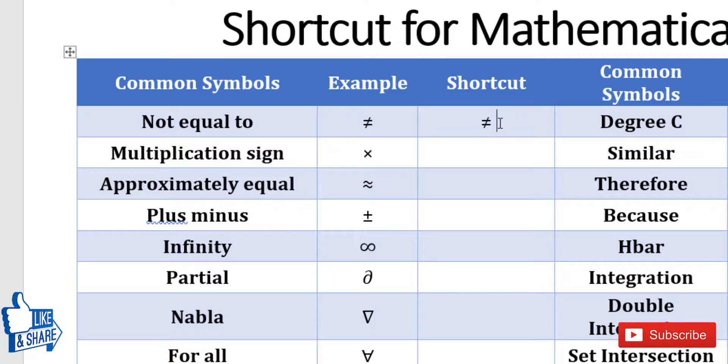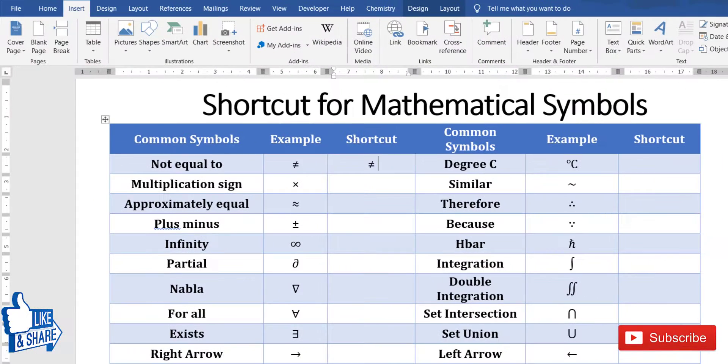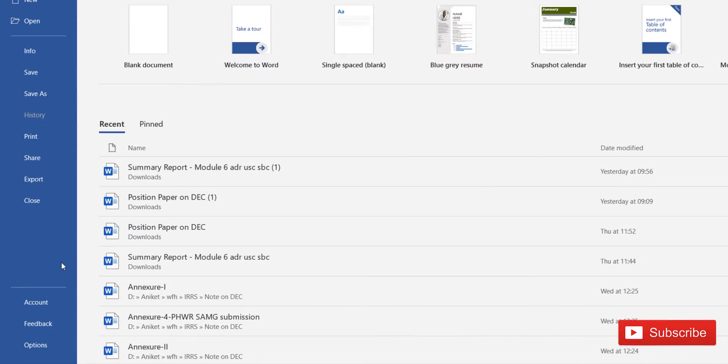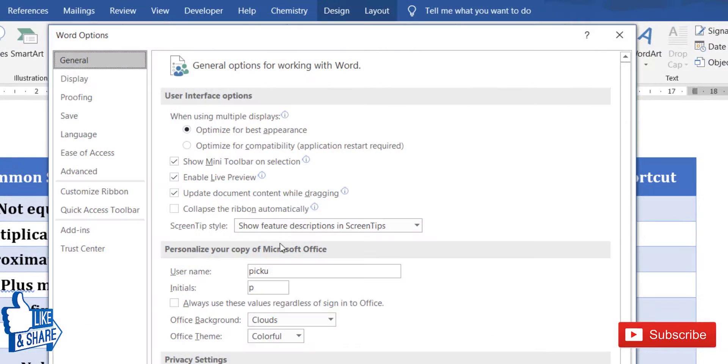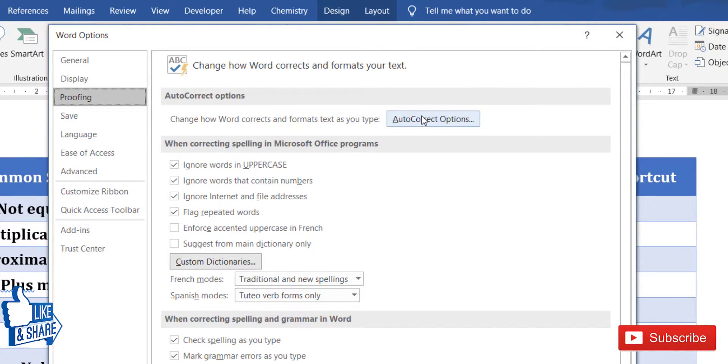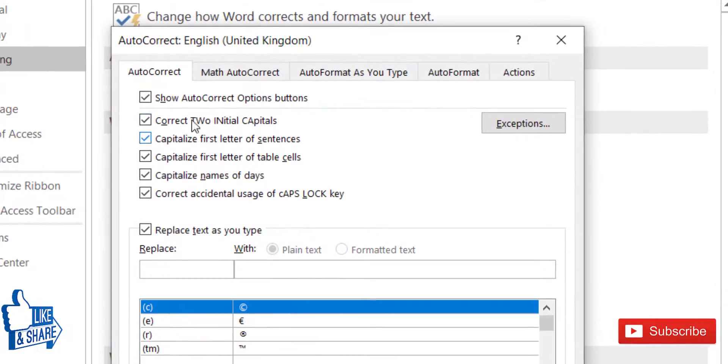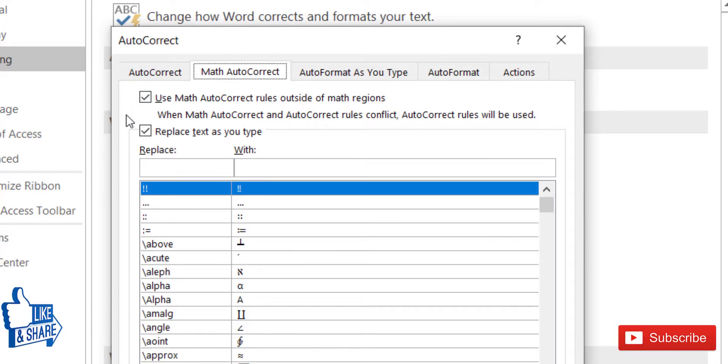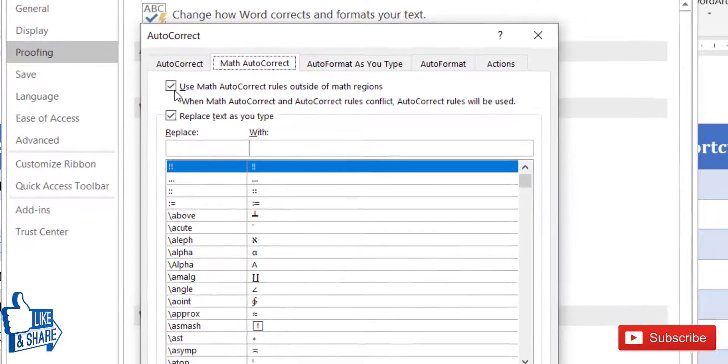But before using this, you need to do a one-time setting. To do that, go to File, click on Options, then in Proofing select AutoCorrect Options. Then in AutoCorrect, go to the Math AutoCorrect tab and make sure that the checkbox near 'Use Math AutoCorrect outside math region' is checked.